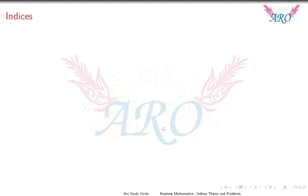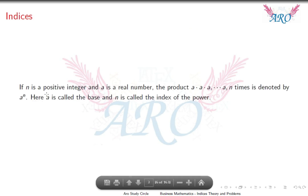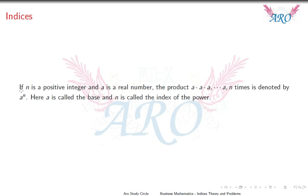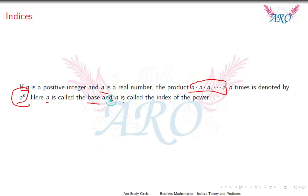So, Indices. First of all, what do you know about Indices? If N is a positive integer and A is a real number, then the product A · A · A and so on N times is denoted by A power N. Here, A is called the base and N is called the index of the power.